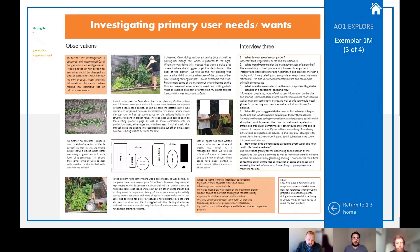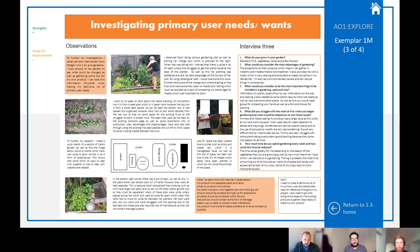In this example, the student has done an observation — observing one of her potential users, looking at how this person gardens and the space they have. Any technical details like measurements or photographs to show the workspace are valuable. For a working-from-home context, it might be worth students photographing the size of a desk or measuring stationery to pull together information that will help design a product that really solves the problem. A location study with measurements and photographs, talking to your primary user while there in situ, is ideal.